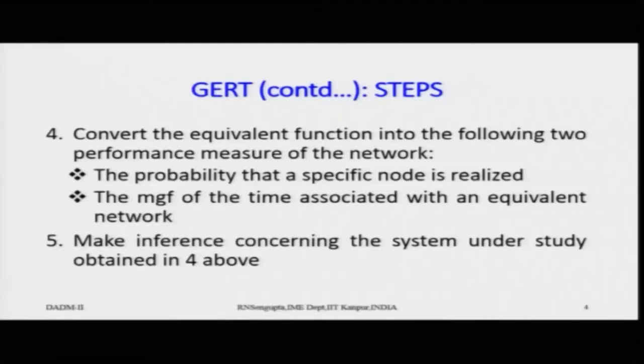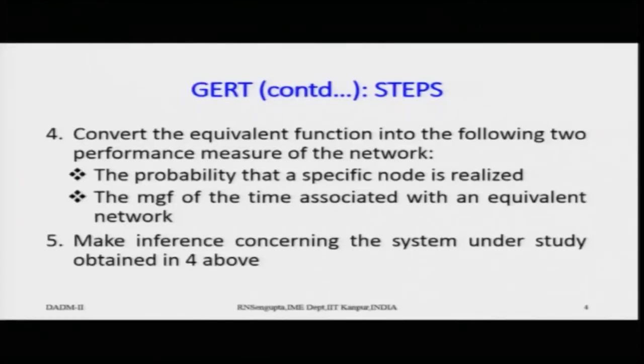In the fourth step you convert the equivalent functional form into two performance measures: first, the probability that a specific node is realized; second, the moment generating function of the time associated with the equivalent network. From the moment generating function you can find the average time, variance, and expected value, giving a full picture of the network from the time perspective — including looping back from right to left — to find the overall average time to finish the project.